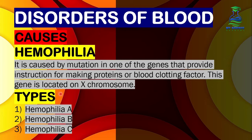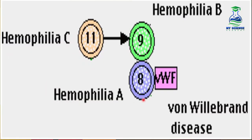There are three main types of hemophilia: Hemophilia A, Hemophilia B, and Hemophilia C. Hemophilia A involves a mutation in clotting factor VIII.